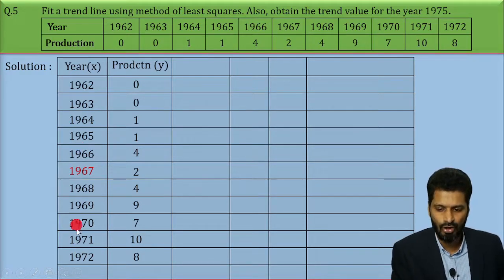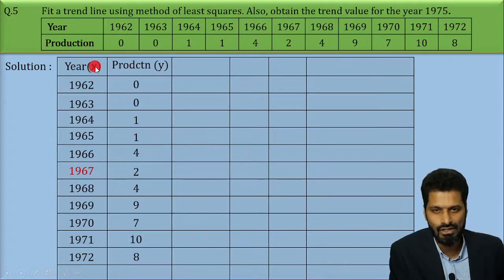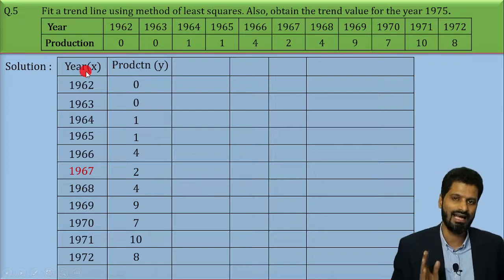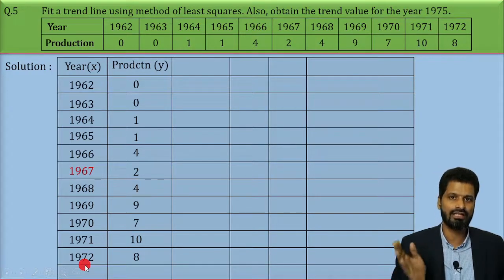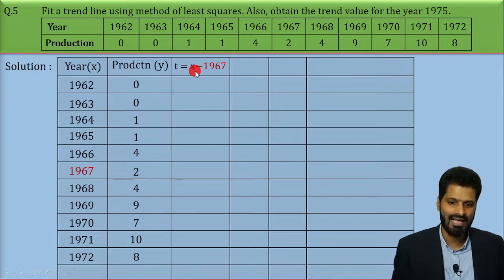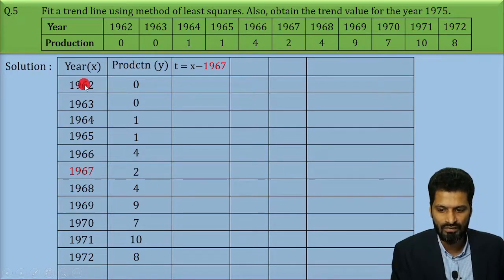Whenever you are given odd observations for the least square method, the x values are in quite large amounts, so our first task is to convert x into terms of t to reduce those values. To reduce them, we convert x to t using: t = x minus 1967, where 1967 is the central most value of the given observations.